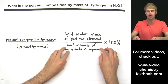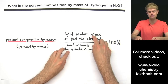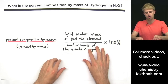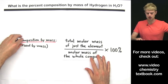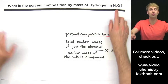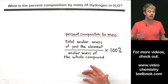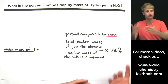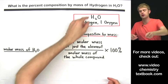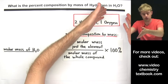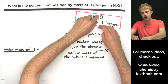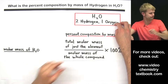To start solving, we need a number for the top and a number for the bottom. Let's begin by calculating the molar mass of H₂O. The chemical formula tells us that there are two hydrogens and one oxygen.